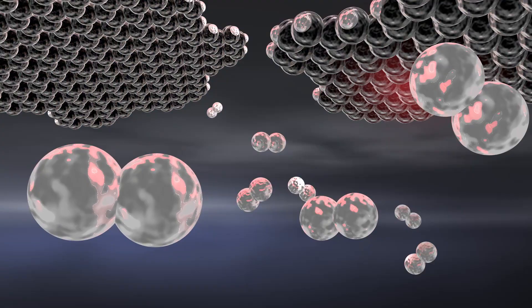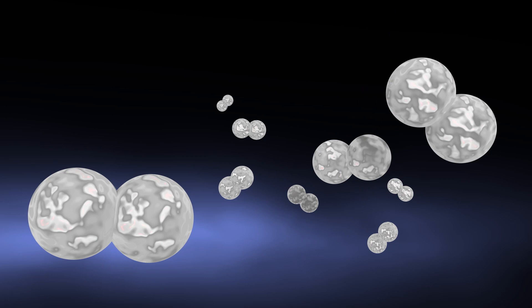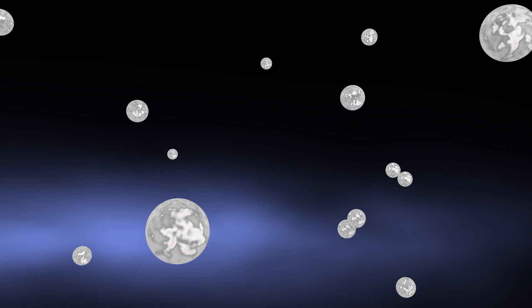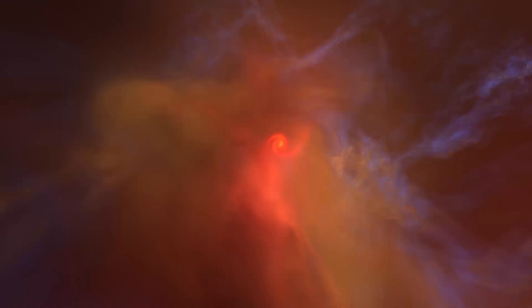Dust shields the cold, dense regions where new stars are forming. If dust wasn't there, the UV photons from other stars would be able to go into these regions and break up the molecules that are necessary for the cooling and collapse of gas into new stars.